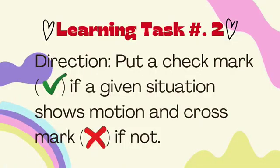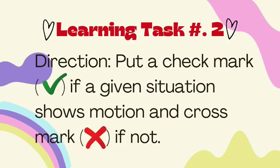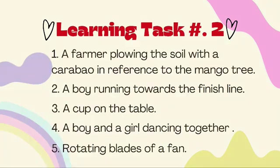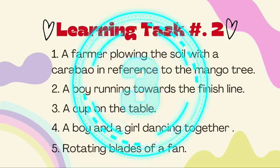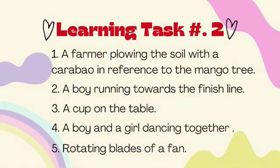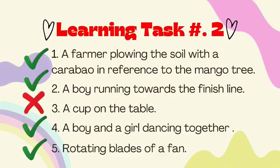Let us do Learning Task Number 2. Direction: Put a check mark if a given situation shows motion, and a cross mark if not. Number 1: A farmer plowing the soil with a carabao in reference to the mango tree. Number 2: A boy running towards the finish line. Number 3: A cup on the table. Number 4: A boy and a girl dancing together. Number 5: Rotating blades of a fan. Now let us check your answers. Did you get all the correct answers? That's impressive!